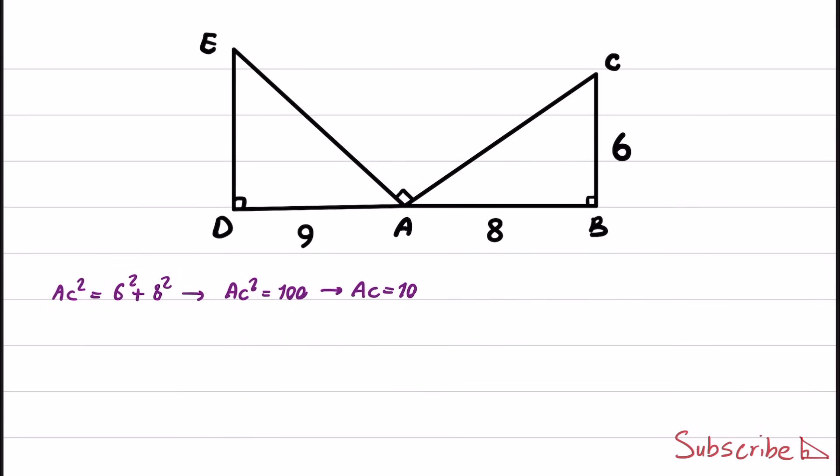We obtain AC as 10. In the next step, we take a look at triangle ABC, and I'm going to name this angle as alpha and this angle as beta, and we know that the sum of alpha and beta are 90 degrees.